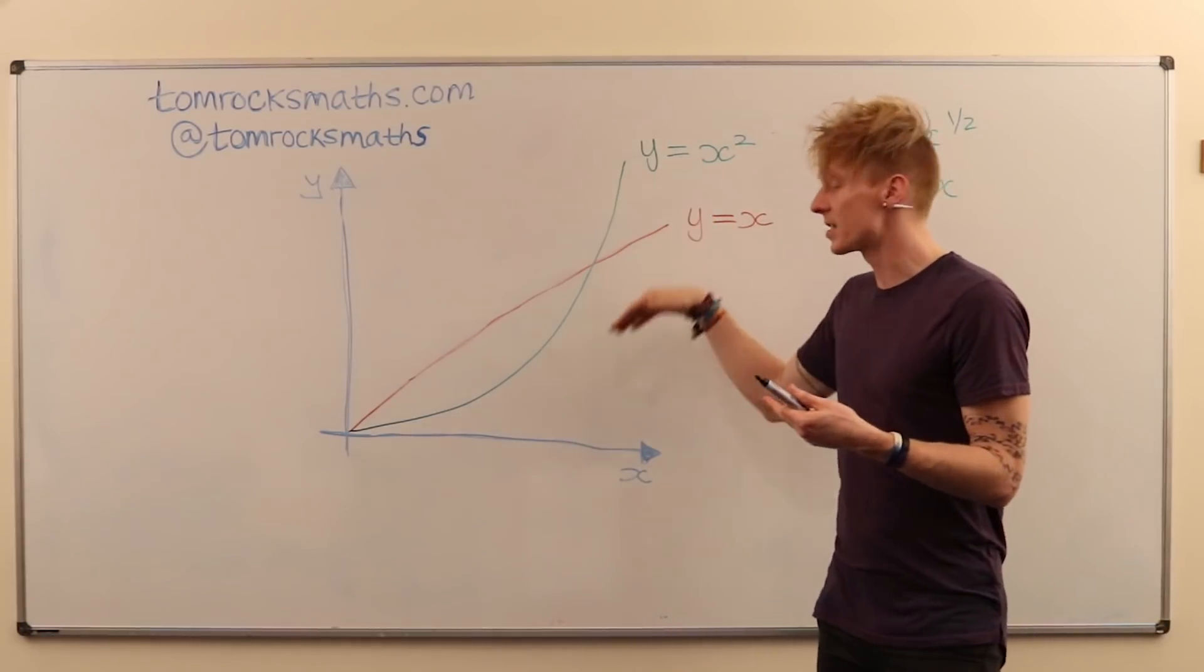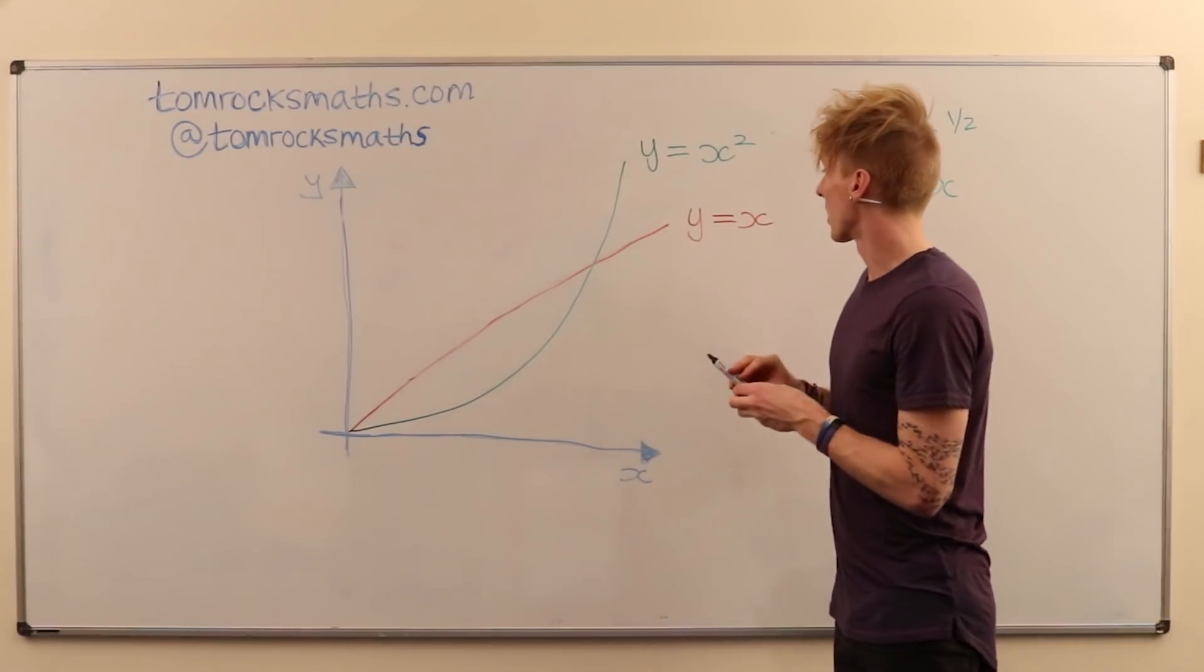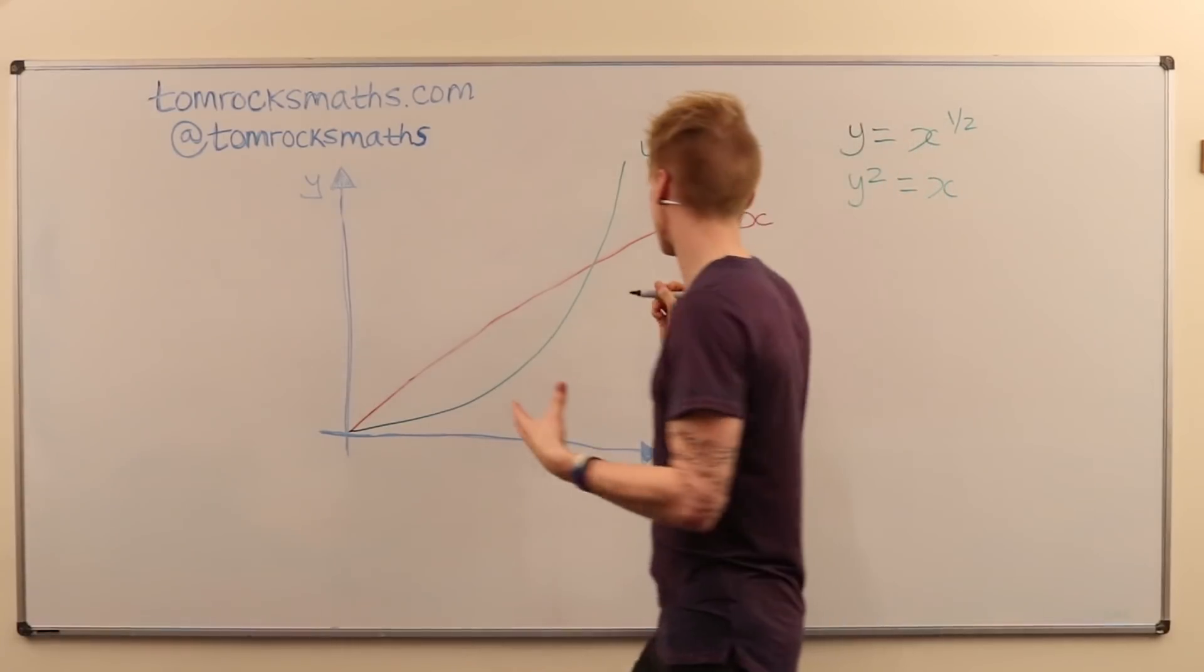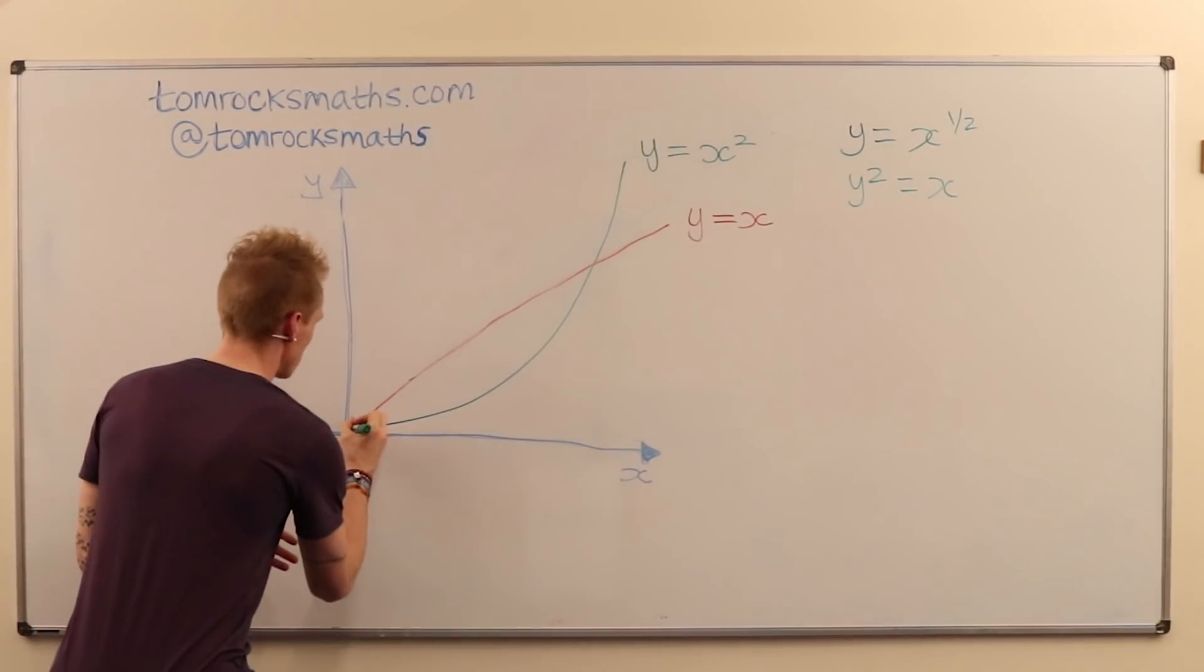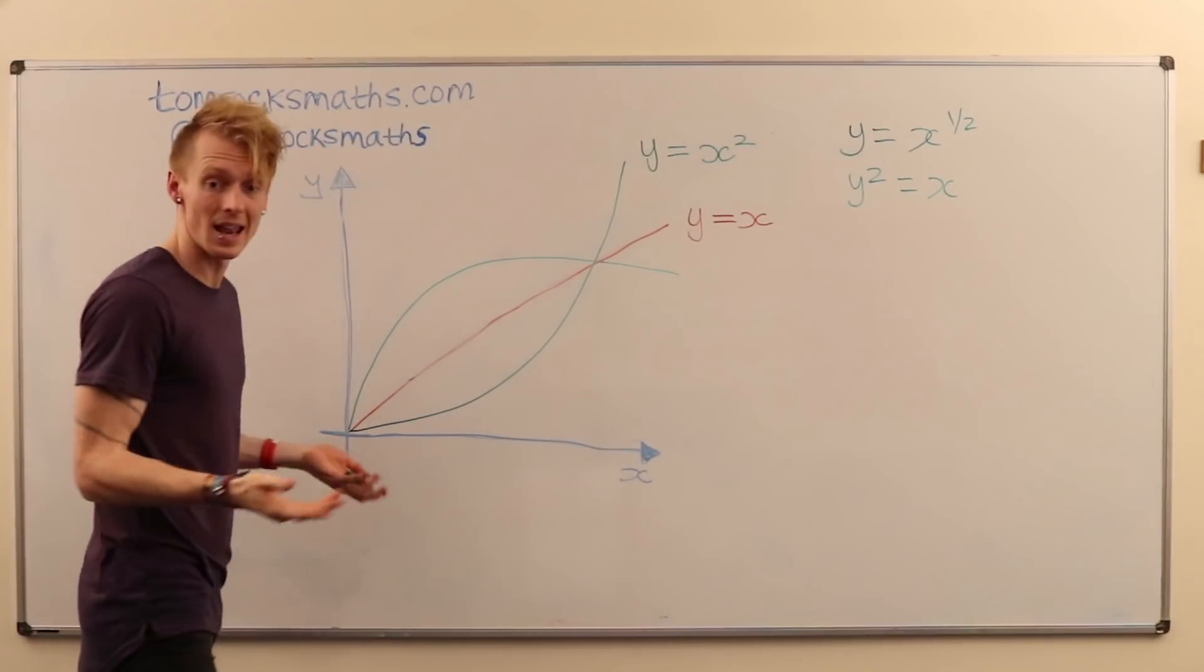Well it's going to be the same thing but with x and y switched. So using the y equals x line and graph as a guide, we expect that y equals x to the half will just be reflected in that line.